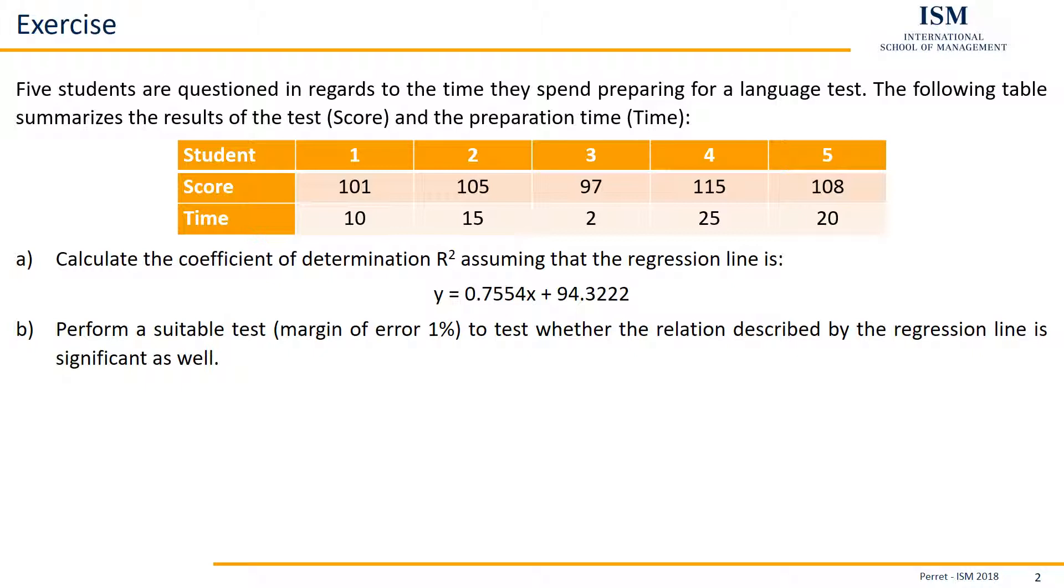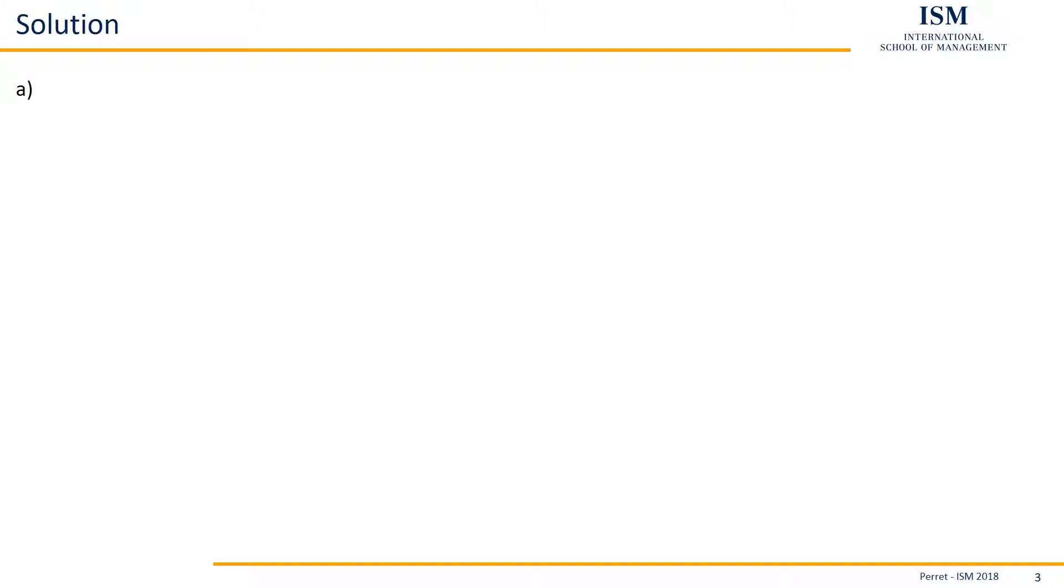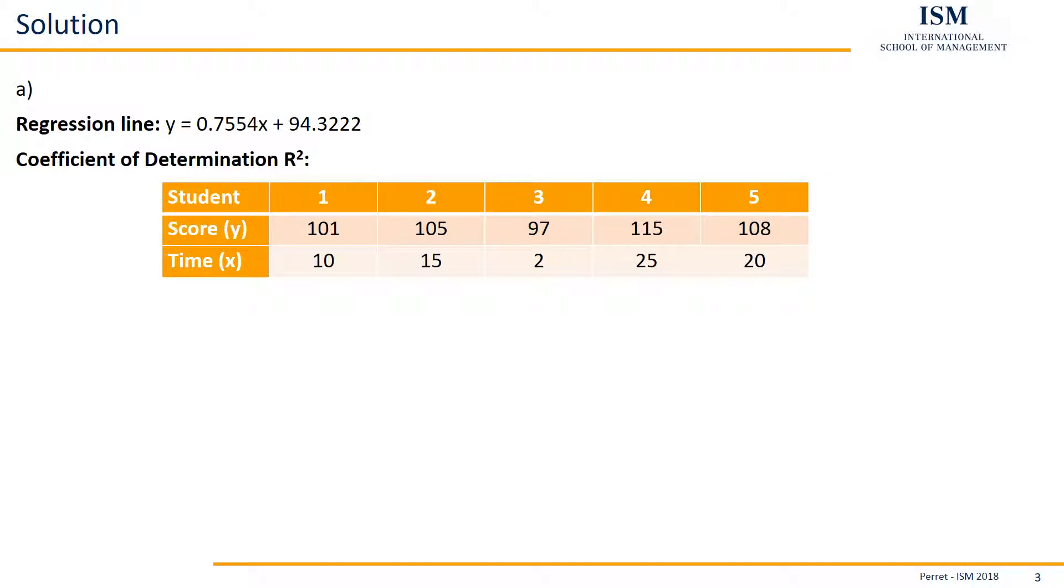So let's do both parts step by step. First we want to get the coefficient of determination. For this we copy the regression line and then we copy the table we were given. Here we actually have two ways to go about this. As we only have one independent variable, we could calculate the Pearson correlation coefficient and then just square this. But this only works if we only have one independent variable.